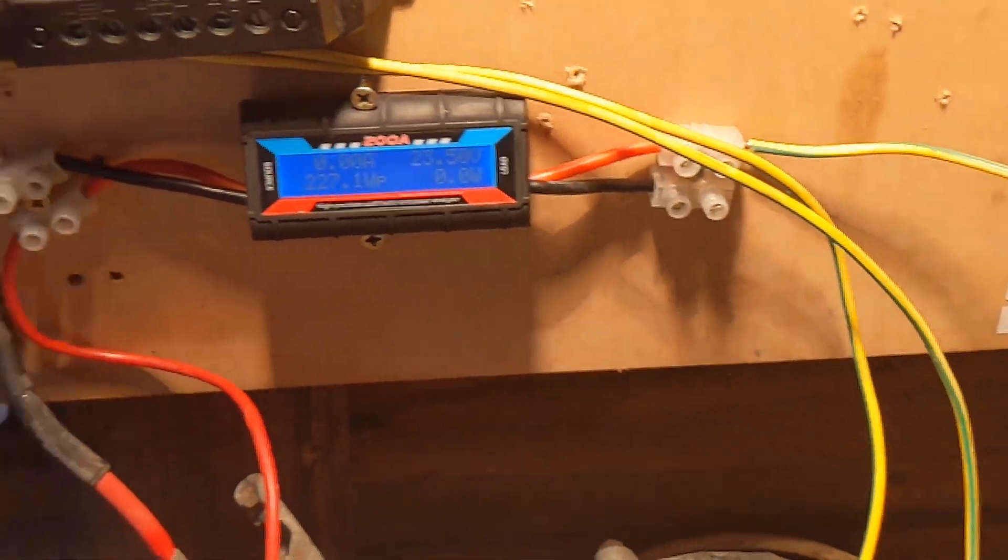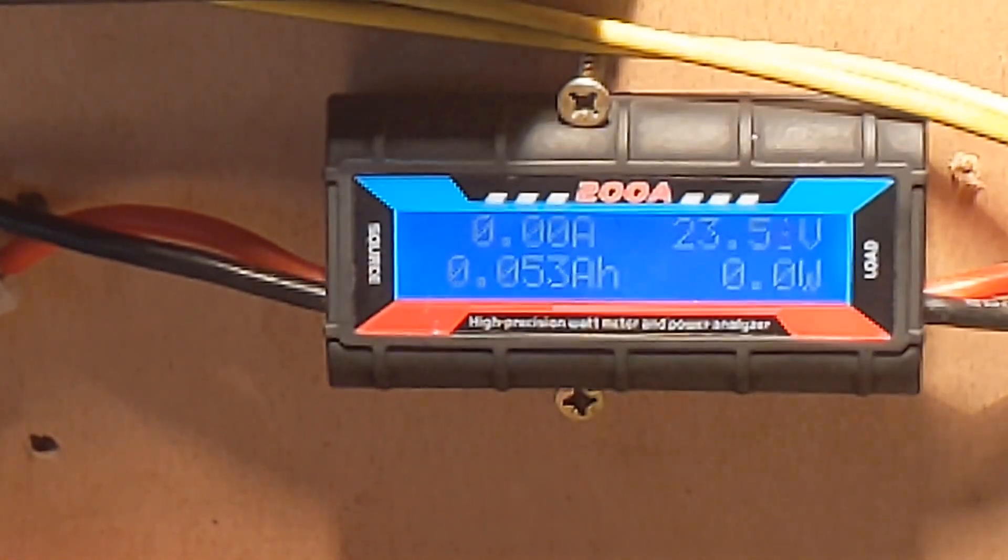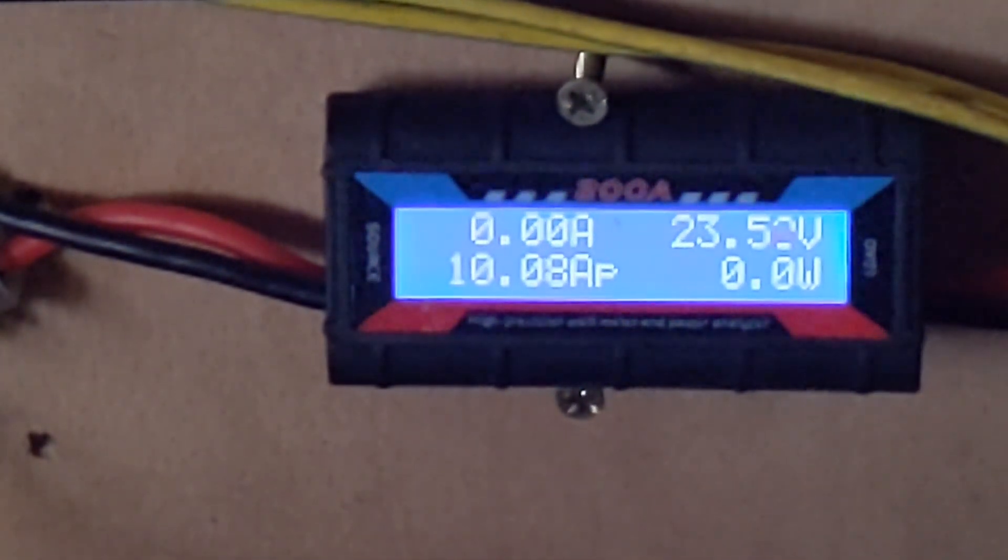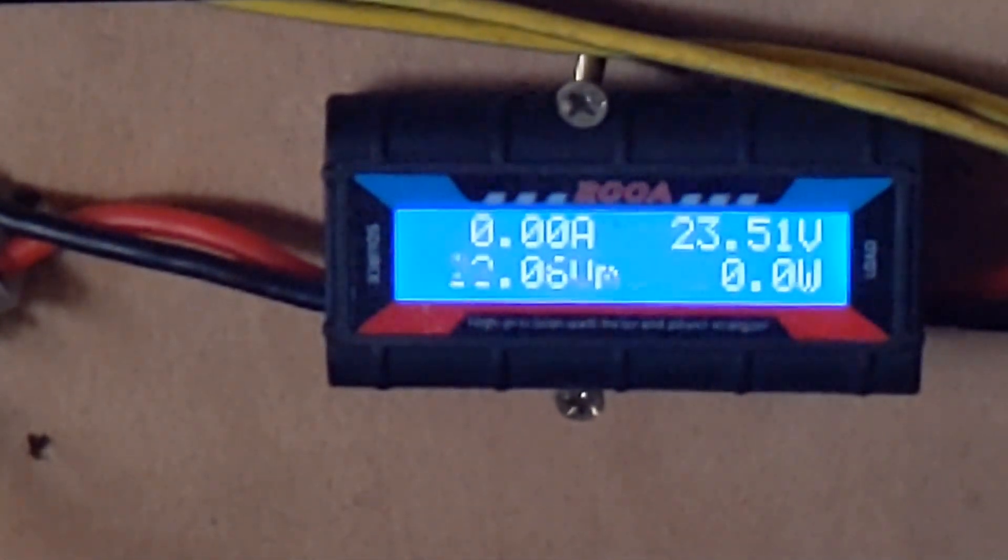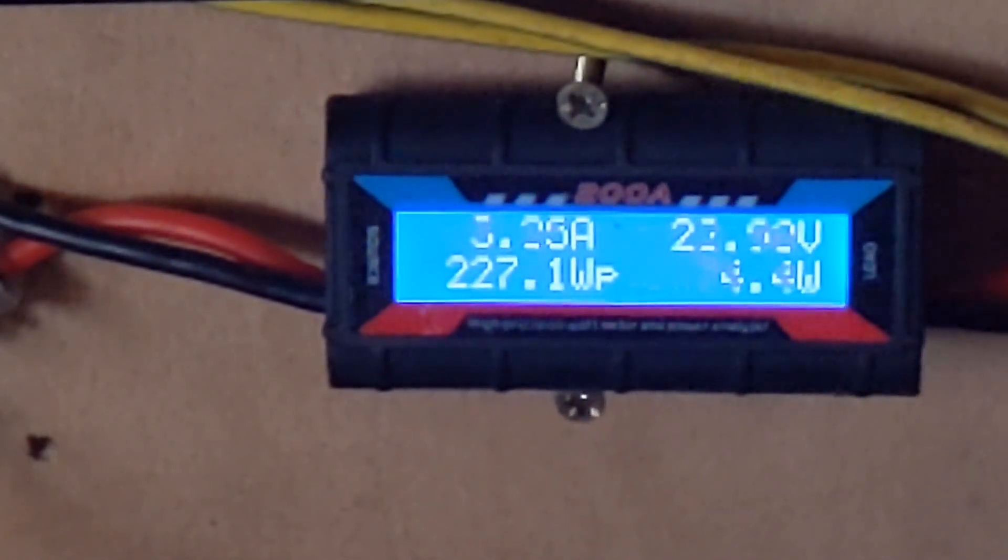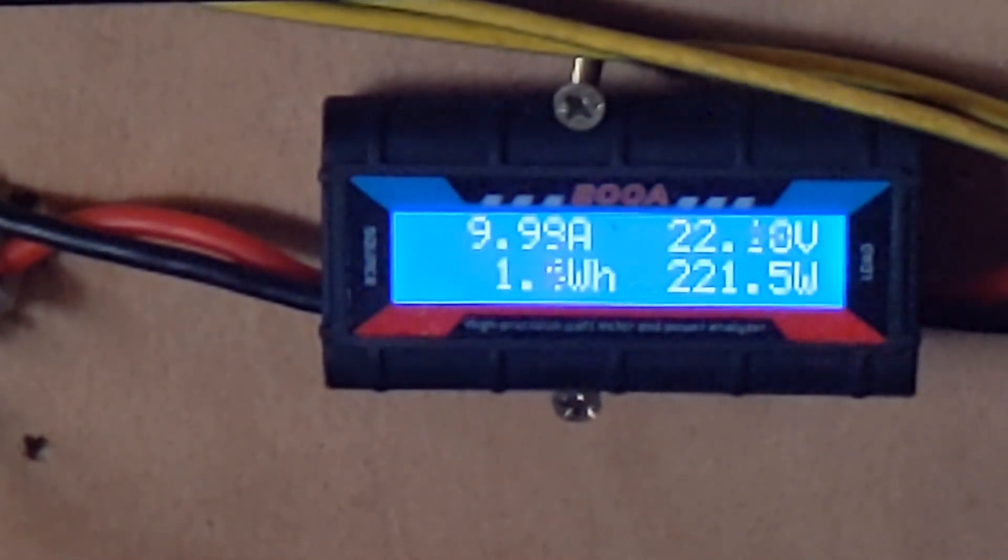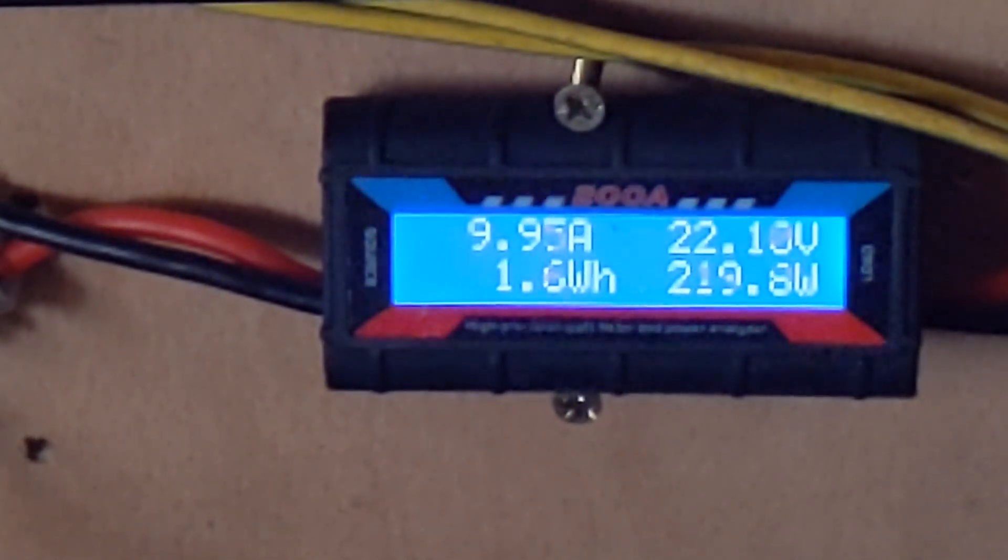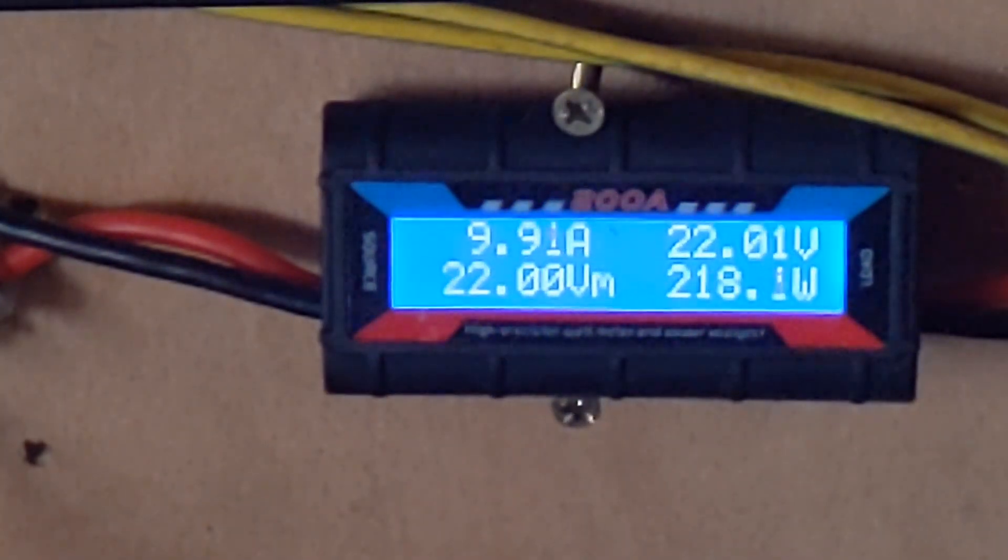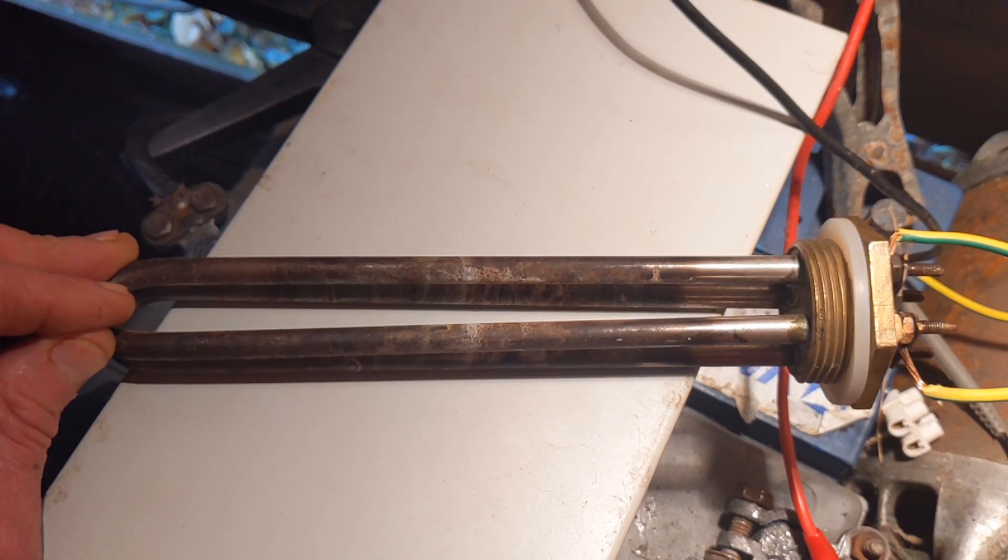I'm just going to concentrate on the meter because the larger dump load doesn't have a switch. I'm going to hold it with my hand until it starts getting warm. Interestingly, it's only using the same amperage. I think what's happening is only one side is heating up.